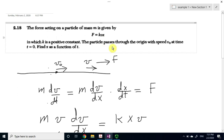Now the particle passes through the origin with speed v0 at time t equals 0. And the question is, find x as a function of time.